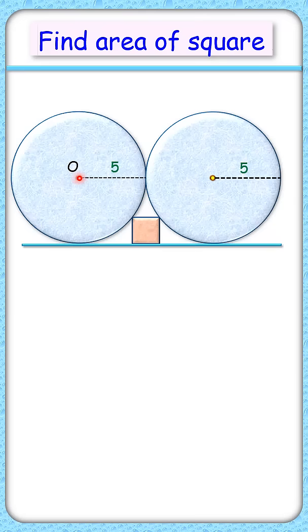Let's join the center of circle to the vertex of square and from center let's drop a perpendicular. From this vertex let's drop perpendicular on the radius.